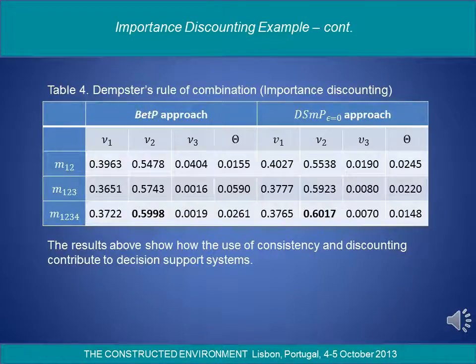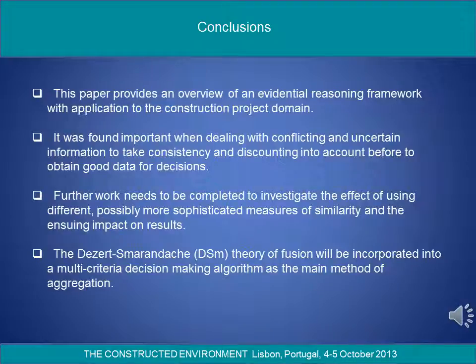Importance discounting example continued, Table 4 — Dempster's rule of combination. The results above show how the use of consistency and discounting contribute to decision support systems. Conclusions: This paper provides an overview of an evidential reasoning framework with application to the construction project domain. It was found important when dealing with conflicting and uncertain information to take consistency and discounting into account in order to obtain good data for decisions. Further work needs to be completed to investigate the effect of using different, possibly more sophisticated measures of similarity and the ensuing impact on results.